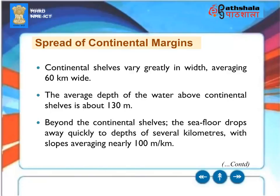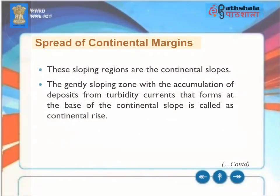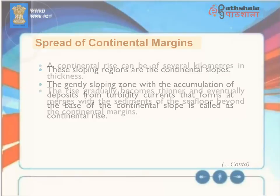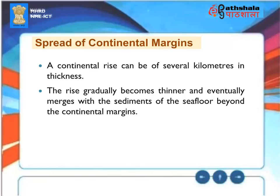Continental shelves vary greatly in width, averaging 60 kilometers wide. The average depth of water above continental shelves is about 130 meters. Beyond the continental shelves, the seafloor drops away quickly to depths of several kilometers, with slopes averaging nearly 100 meters per kilometer — these sloping regions are the continental slopes. The gently sloping zone with accumulation of deposits from turbidity currents that forms at the base of the continental slope is called the continental rise. A continental rise can be several kilometers in thickness, and gradually merges with the sediments of the seafloor beyond the continental margins.